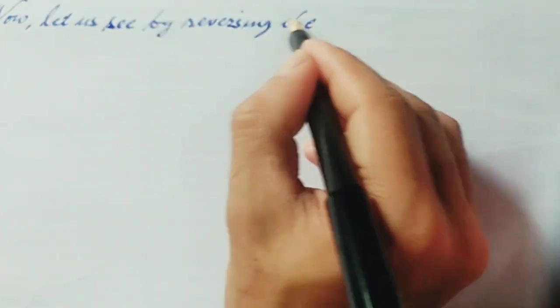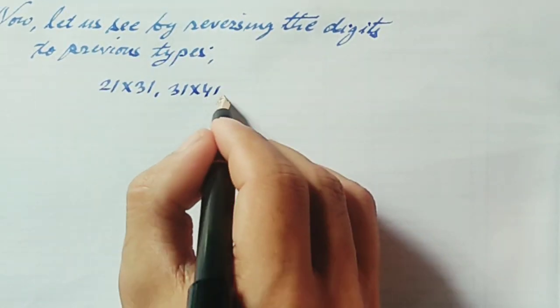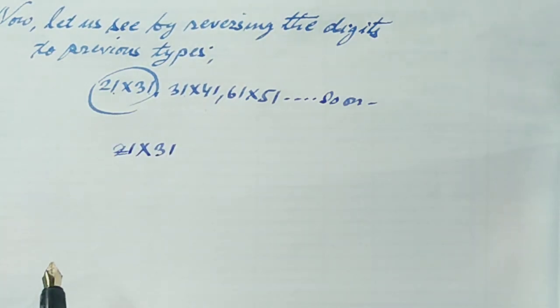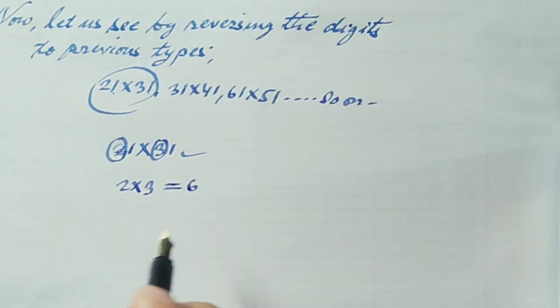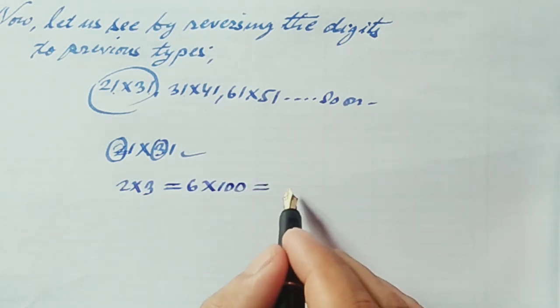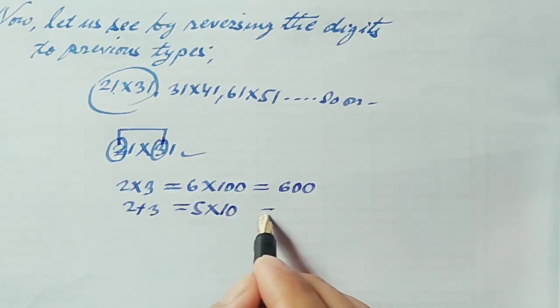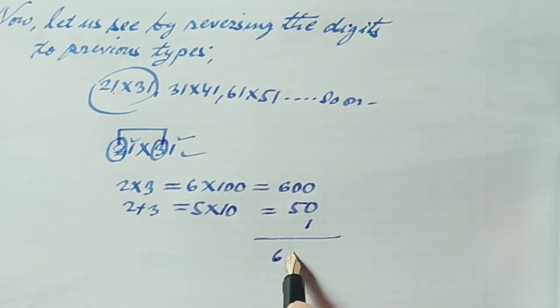Now let us see by reversing the digits to the previous types of numbers, like 12 into 13, that is 21 into 31, or like 31 into 41, 61 into 51, and so on. Here all the numbers in the unit place are 1. Now let us take the example of 21 into 31. Let us take this 2 and 3, that is 2 into 3 equals 6, but let us multiply with 100, this gives us 600. In the second case, we will add this 2 and 3, 2 plus 3 equals 5. This 5 is multiplied with 10 and it gives 50. Finally, let us take the number in the unit place, that is 1. Let us add: 651. Therefore, 21 into 31 gives us 651.